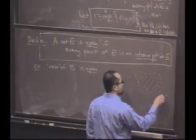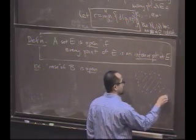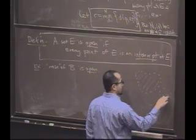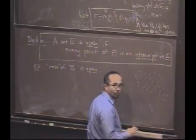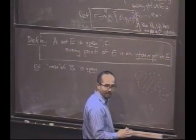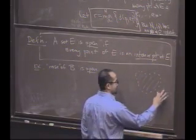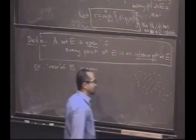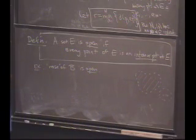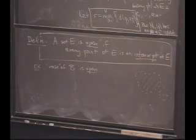What if the nose had two nostrils — two missing points? Would it still be open? Julian says yes. It would. It's kind of gross, but yes — it is open.